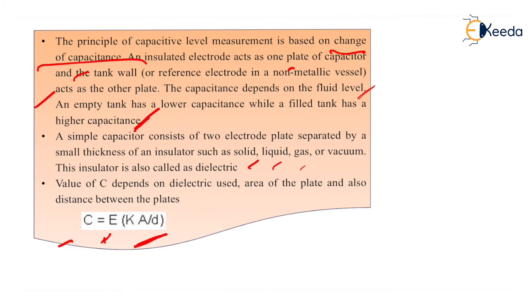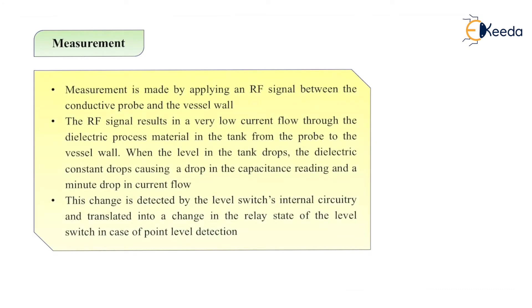The capacitive level measurement works on the principle of change of capacitance. The measurement is made by applying an RF signal between the conductive probe and the vessel walls. The vessel wall acts as one plate of the capacitor and the conductive probe acts as the other plate, forming an electric field in between. The RF signal results in a very low current flowing through the dielectric process material in the tank from probe to the vessel wall.